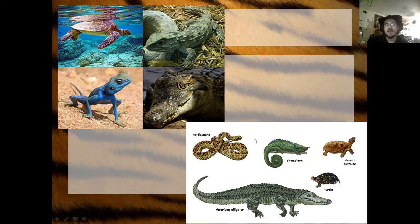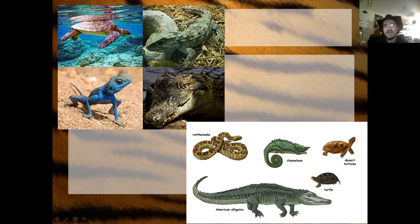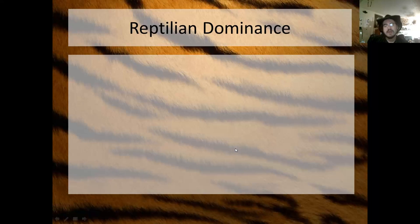Here's a variety of non-bird reptiles: a sea turtle, a desert tortoise, a regular little turtle, some lizards like a chameleon, two colorful lizards, alligators and crocodiles, and then snakes — which are limbless but evolved from reptiles that had legs; they just lost their limbs.